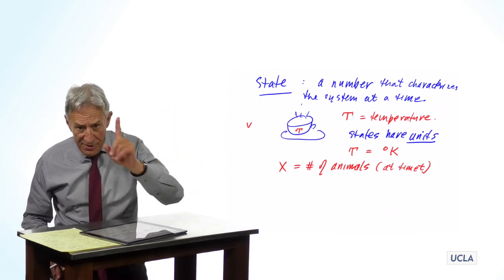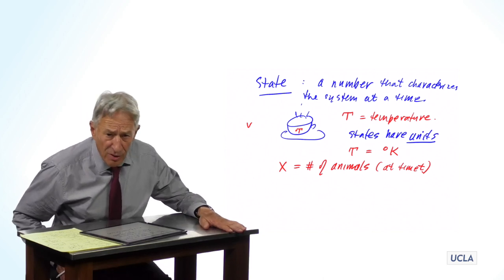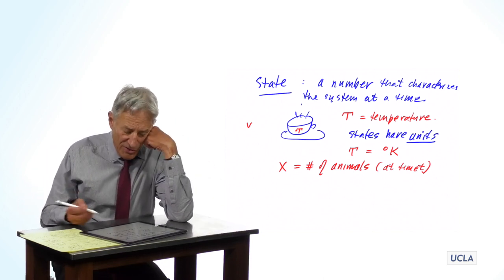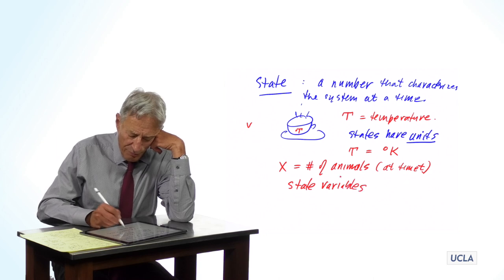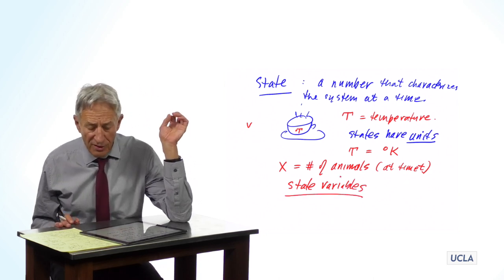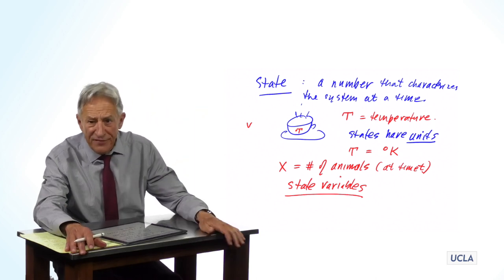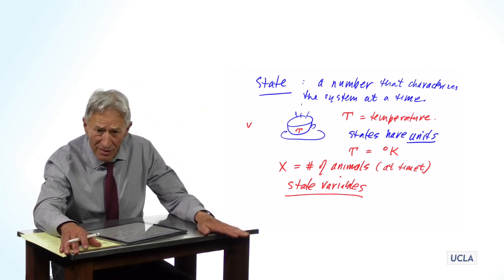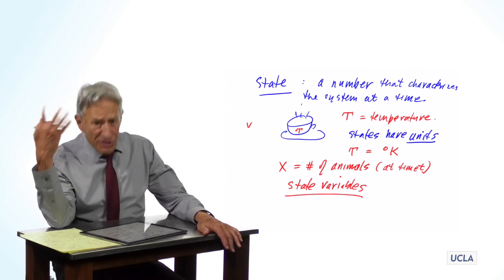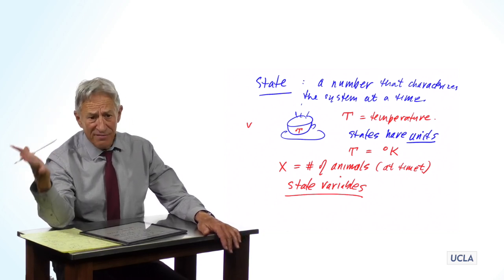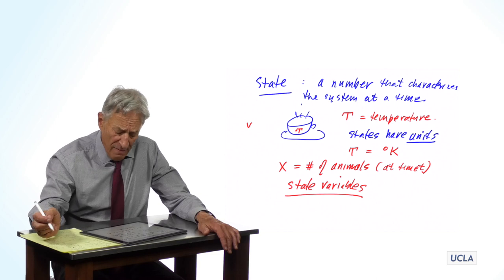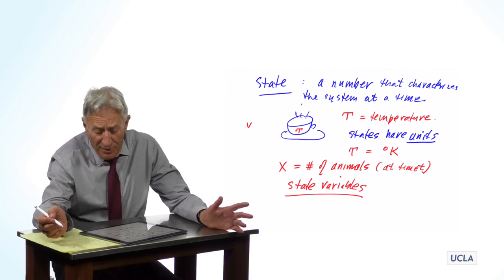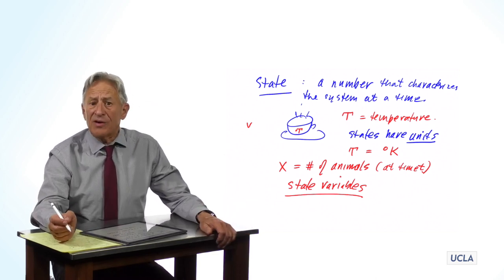So we have this concept, in this case of just a single variable, as a state. I used the term variable, and in fact these are also called state variables — a term I'm going to use a lot. The state variable for the coffee system in this particular case is temperature, because that's what we're interested in. The state of a system definitely depends upon what it is that we're trying to understand. So the state variables in this case are T equals temperature, or x equals number of animals.